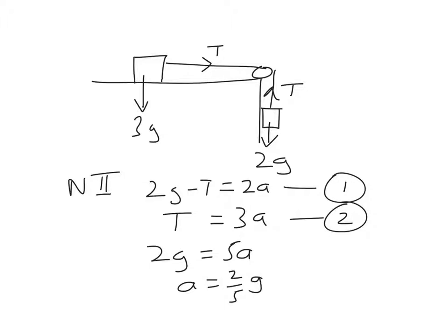And now for the first part, until the friction kicks in, we can use suvat, that will be on the next slide. So we've just shown that a is 2 fifths g, 2 fifths g is 3.92.